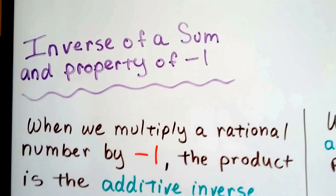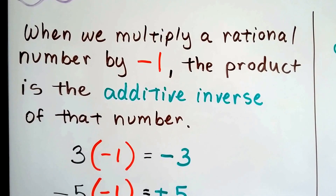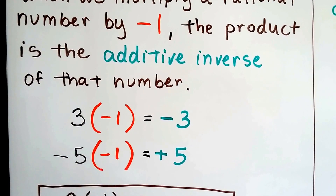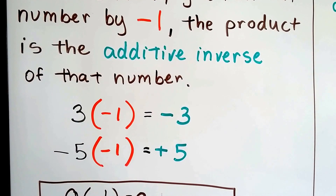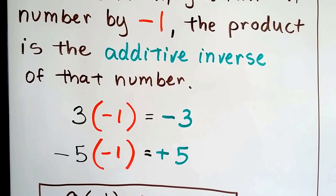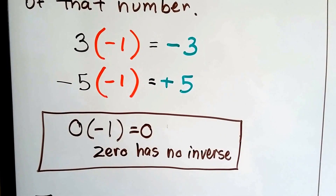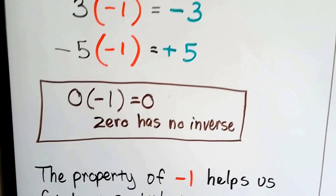This is the inverse of a sum and the property of negative 1. When we multiply a rational number by negative 1, the product is the opposite — it's the additive inverse of that number. If we multiply positive 3 by negative 1, we get negative 3. And if we multiply negative 5 by negative 1, we get positive 5. It's the opposite. Remember, 0 has no inverse — 0 times negative 1 is just 0.